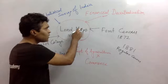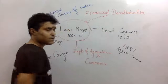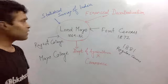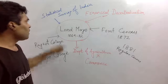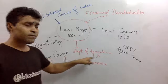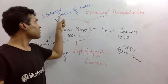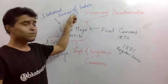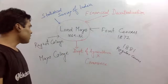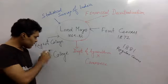Mayo introduced financial decentralization in India, in the provinces. And during his tenure, the Department of Agriculture and Commerce and Statistics and Services of India were established.